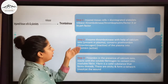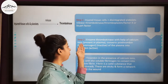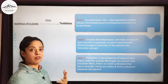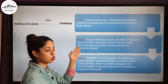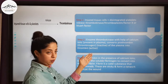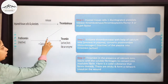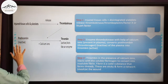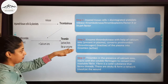In Step 2, this enzyme thrombokinase, with the help of calcium ions present in the plasma, converts prothrombin — also known as thrombinogen — which is an inactive substance in the plasma, into thrombin, which is an active substance.